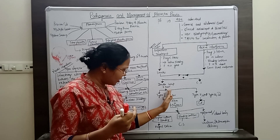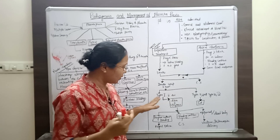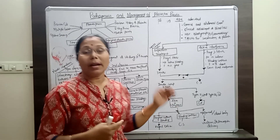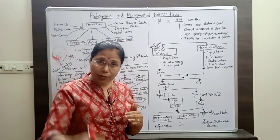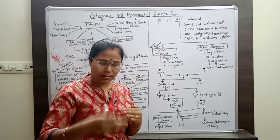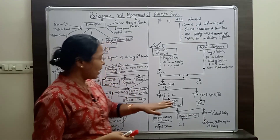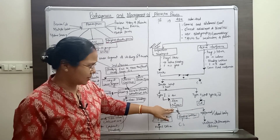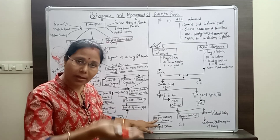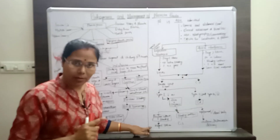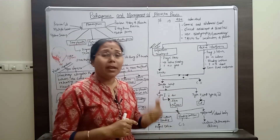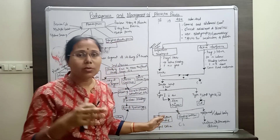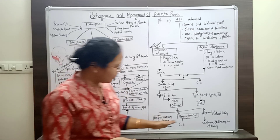In the double set of examination, for type 1 and type 2 anterior placenta previa — which have less adverse effect during labor — we go for artificial rupture of membranes (ARM) and start oxytocin injections in IV fluid for successive uterine contractions. If contractions progress without bleeding, we allow vaginal delivery. However, if after ARM and oxytocin the contractions do not progress and bleeding continues, we do not wait and immediately proceed to cesarean section.